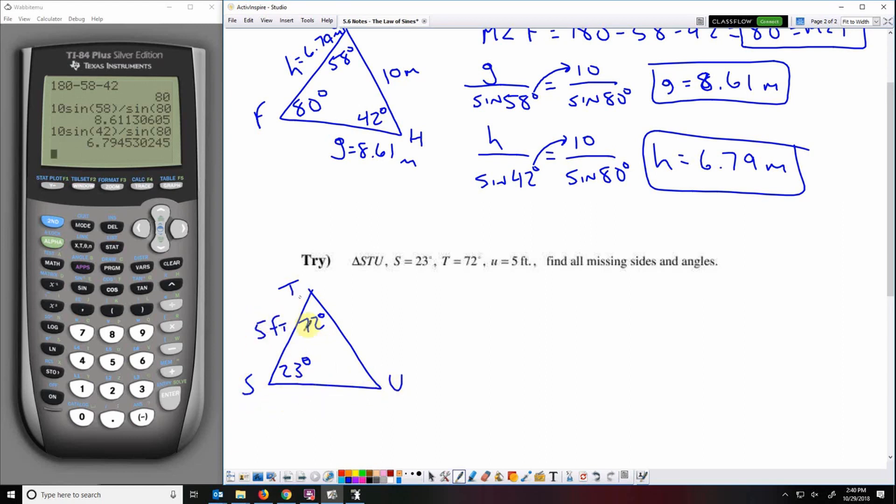So here I want to find the measure of angle U, the length of side T, and the length of side S. So first, 180 minus 23 minus 72 is 85. That's the measure of angle U.